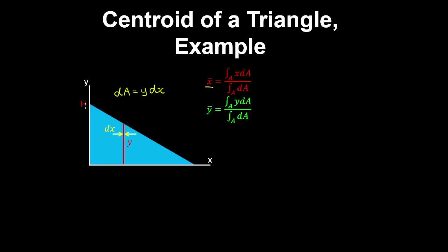And considering this triangle has a height h and width b, the slope of this line is therefore minus h on b. And then multiplying by x and adding the y-intercept gives the equation of that line.